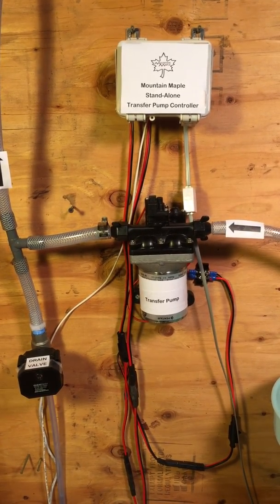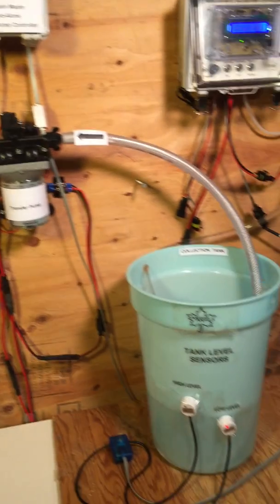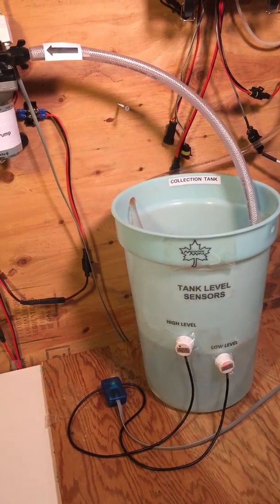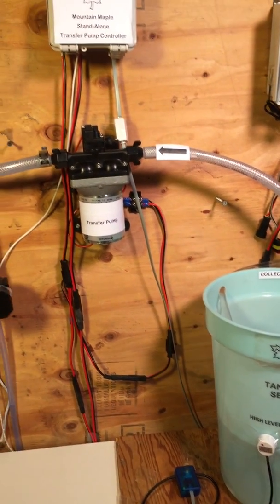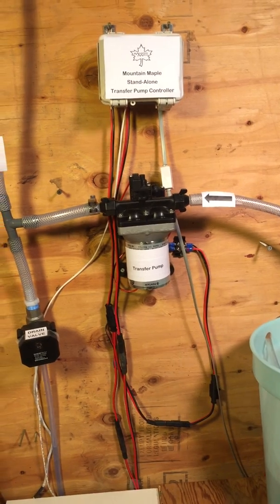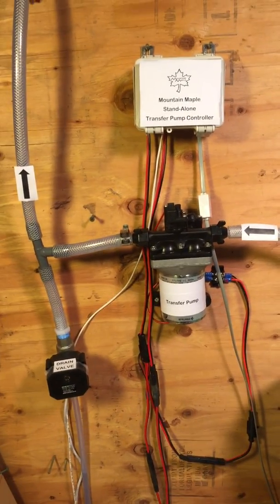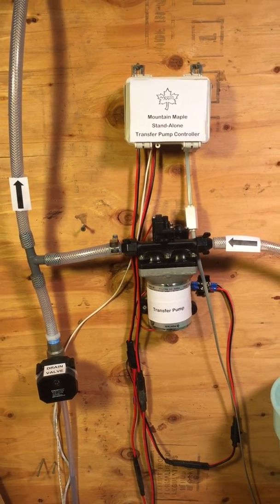Instead of using it for a transfer pump, you could use this in your sugar house and have the tank level trip your RO pump. So then you can get a jump on your sap RO, and the RO would have to be prepped and ready. And this is what I'm going to be trying this spring.